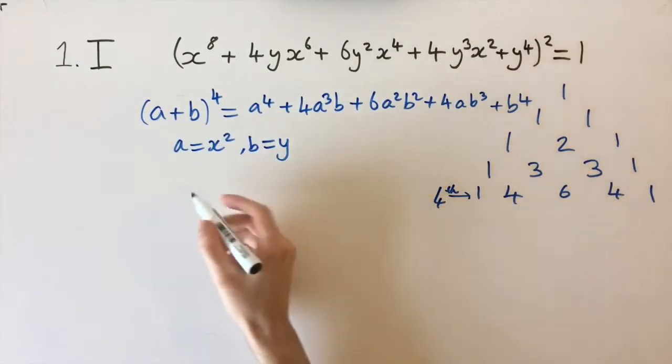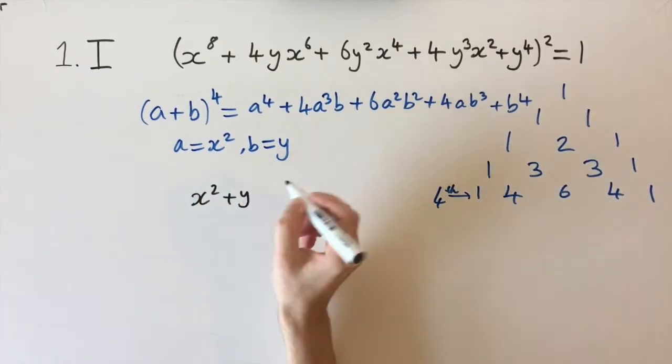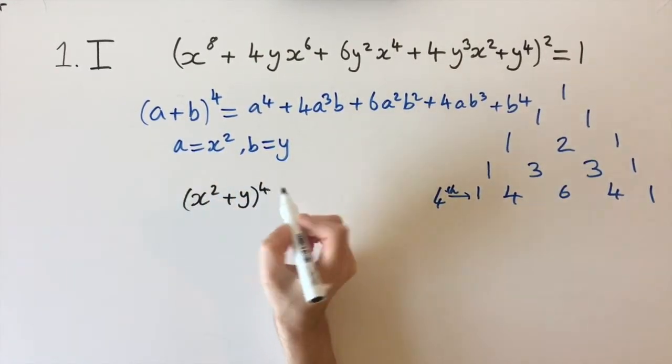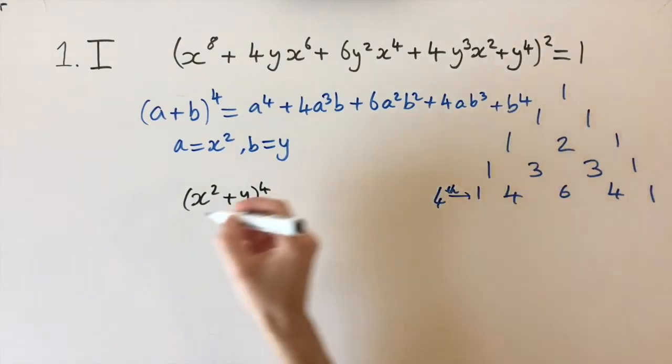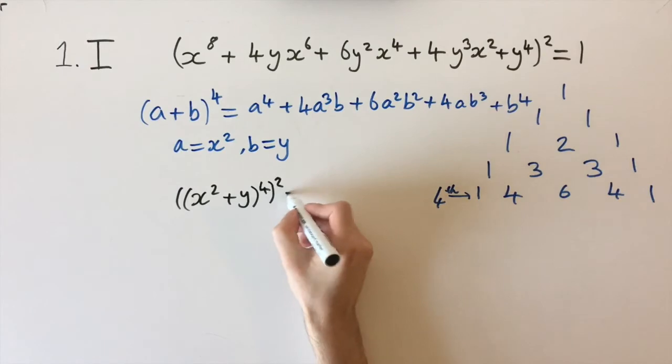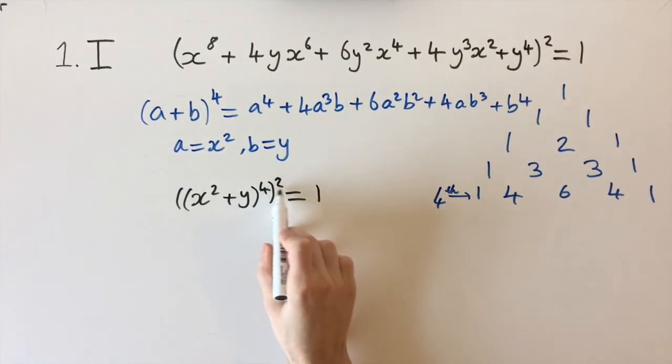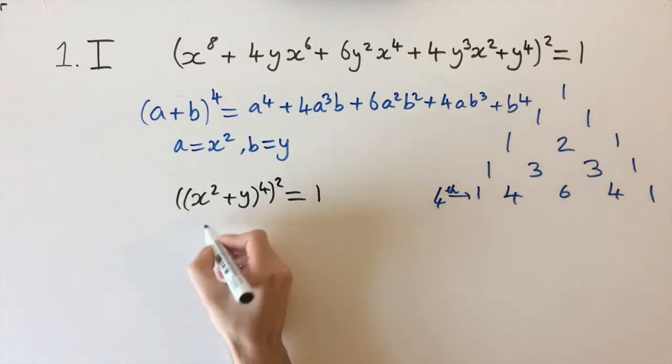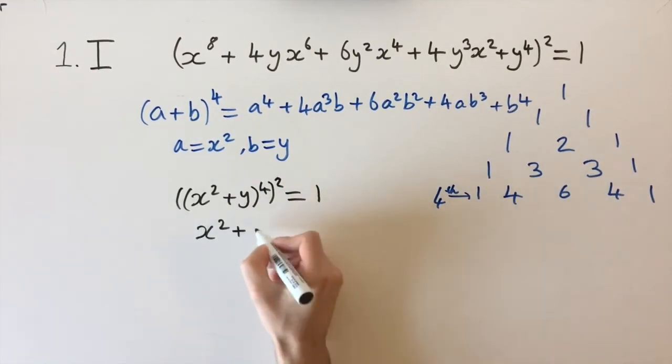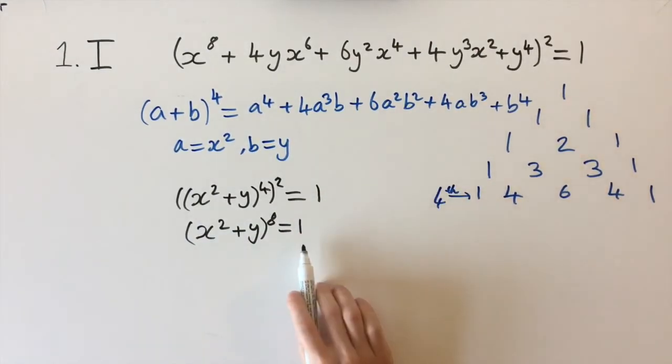This tells us that we can write the above equation as (x² + y) to the power of 4, and then we still have the squared from up here, so to the power of 2, and this equals 1. Just using the laws of indices that you know, we can multiply 4 and 2, and we get (x² + y)⁸ = 1. We've simplified the problem massively now.